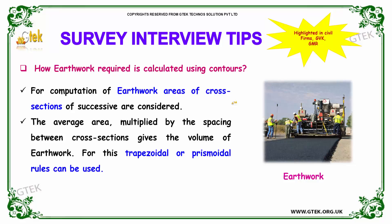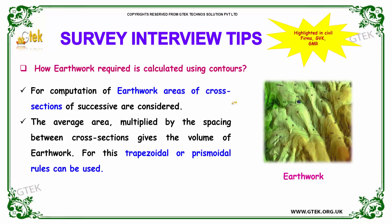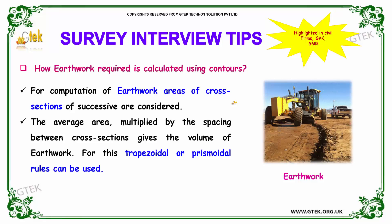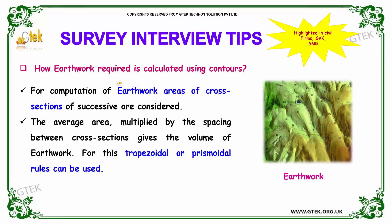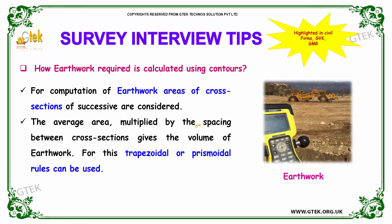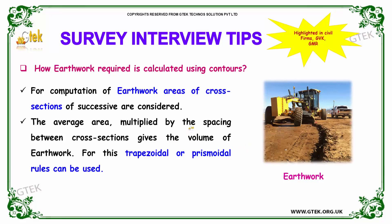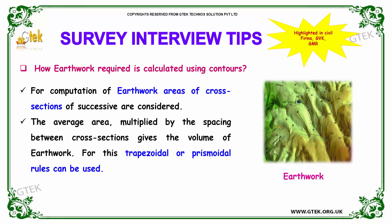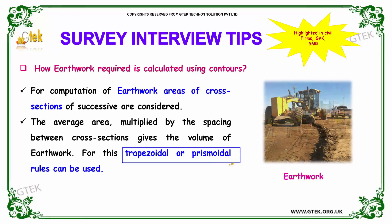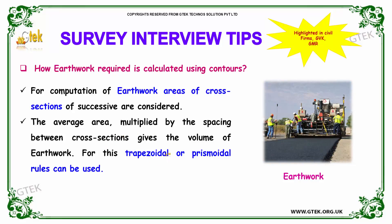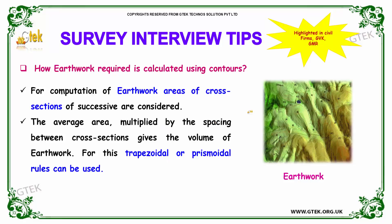Our next question is: how is earthwork required calculated using contours? For computation of earthwork, areas of cross sections of successive contours are considered. The average area is obtained and multiplied by the space between cross sections, giving the volume of earthwork. For this, trapezoidal or prismoidal rules can be used.